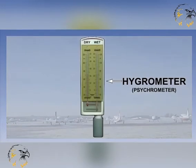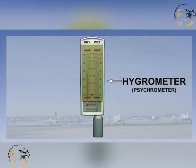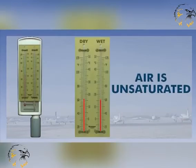In meteorology, it is vital to know how much moisture the air contains at any one point. We can do this using a hygrometer, also known as a psychrometer. Here we see a diagram of one type, which uses a wet bulb and a dry bulb arrangement. If air is unsaturated, water will evaporate into it from the muslin, and latent heat will lower the temperature of the wet bulb.